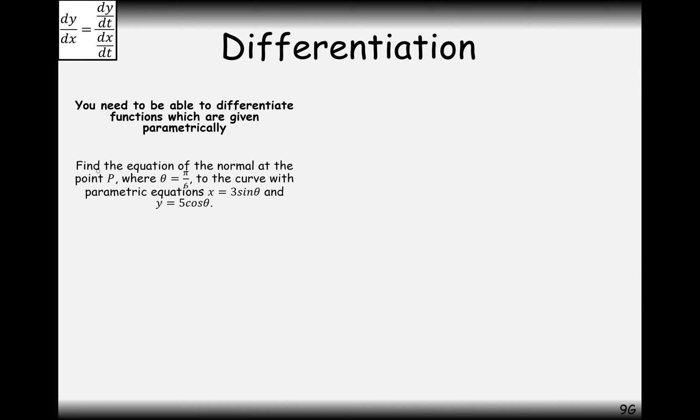So the next question is in terms of theta now. And exactly the same rule works with d theta as well. dy by dx is going to equal dy by d theta all over dx by d theta. So, find the equation of the normal. We're going to have to add in an extra step there. To the point P when theta equals pi over 6 to the curve with parametric equations x equals 3 sine theta and y equals 5 cos theta.